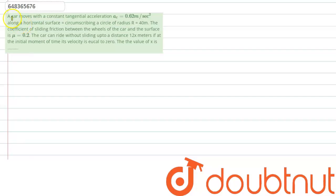Hello everyone, we have to solve a question here. A car moves with a constant tangential acceleration AC equal to 0.62 m per second squared along a horizontal surface.